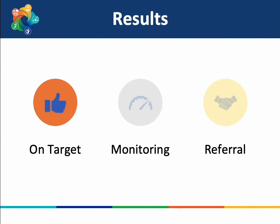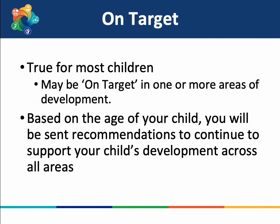First, we will talk about on-target results. As mentioned earlier, most children — about 85%, or 85 out of every 100 children — are on target for development or even above average. If your child falls into this category across all areas of development, recommendations will be shared in the letter you receive, outlining activities and ideas for how to continue to support your child's development.